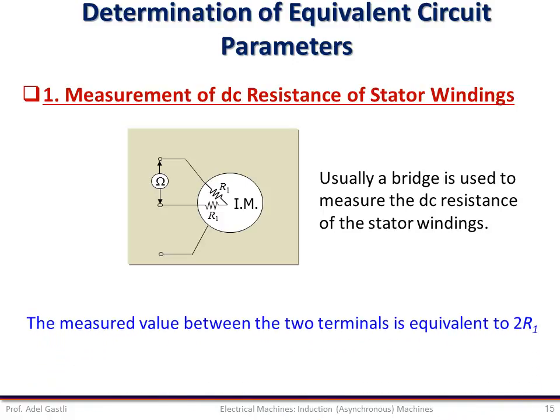The measured value between the two terminals is equivalent to twice the stator resistance R1. However, since the measured resistance is a DC equivalent resistance while the winding is subject to AC current, it is preferable to use a correction factor to find an approximate AC value of the stator resistance, accounting for the skin effect under alternating current. Usually at 50 or 60 Hz the difference is not significant, but for high frequencies a correction factor should be considered. Note that the AC resistance should be higher than the DC resistance.